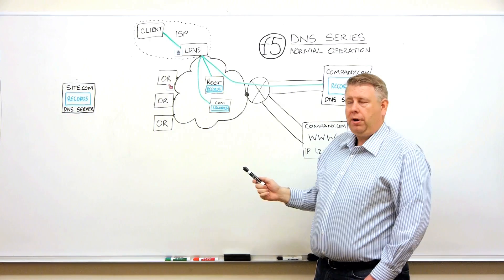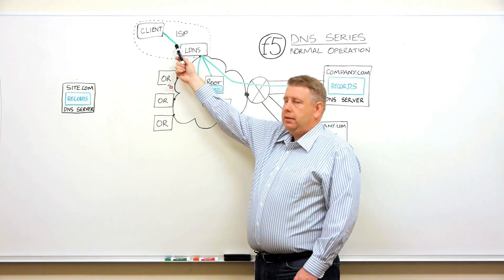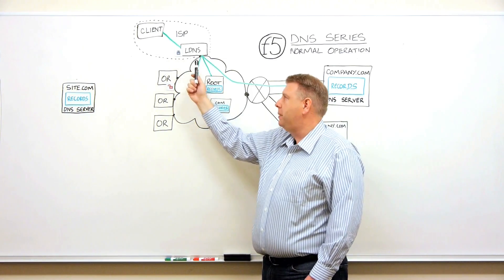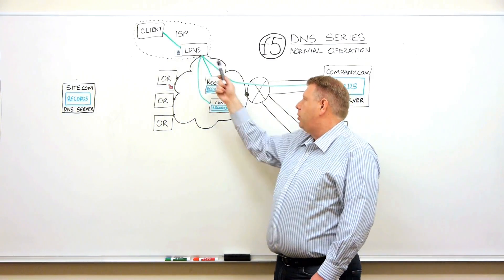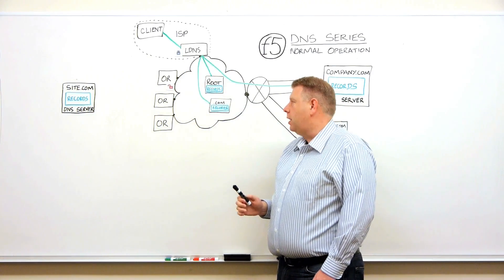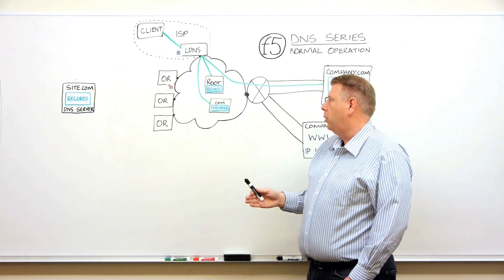And it uses a protocol we call UDP. The UDP protocol is stateless. So it's that way because it's fast. What do I mean by stateless? I mean that there's no connection information. It's just a query and a response. And that's very important when we start talking about denial of service attacks, and we'll get a little more into that detail as we go forward.